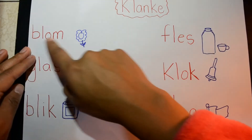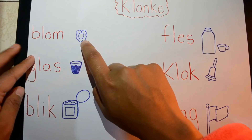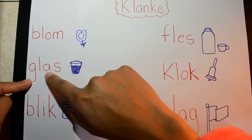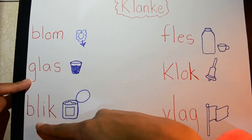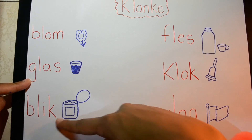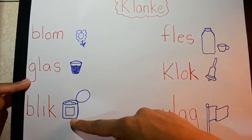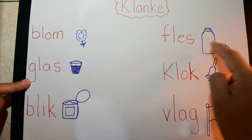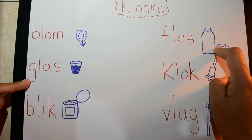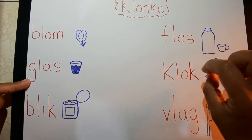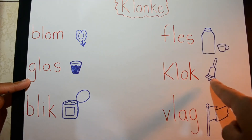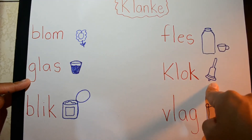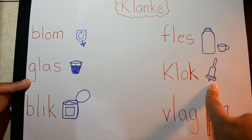Okay, so blom means flower. Glas means glass. Bluk means tin. Fles means a flask that you drink tea out of. Klok means bell — it's not a clock like a watch.